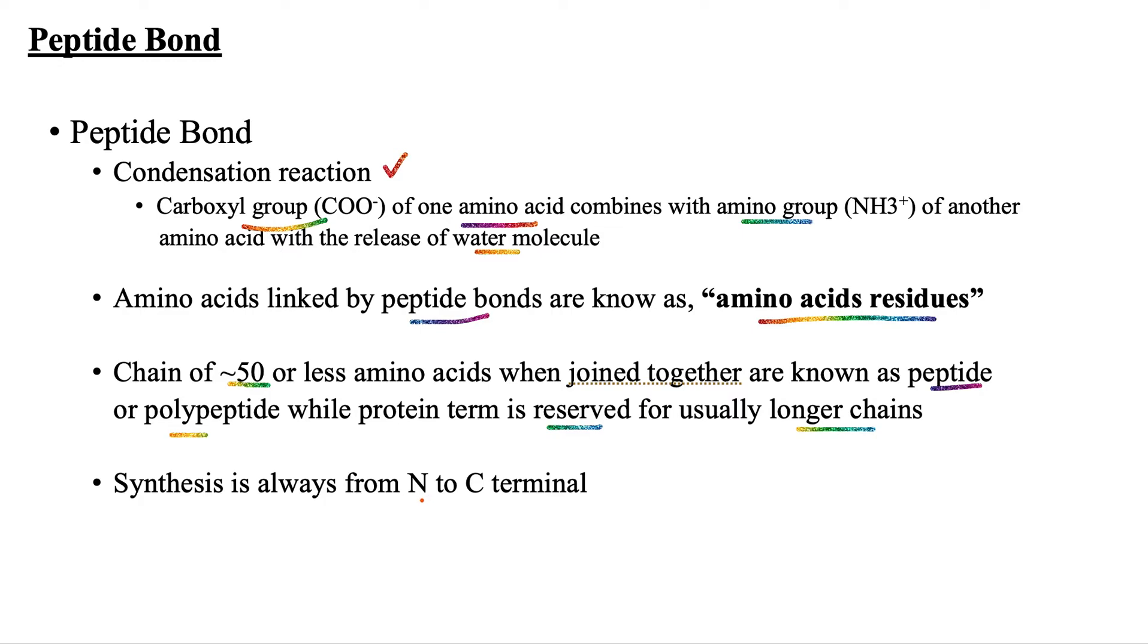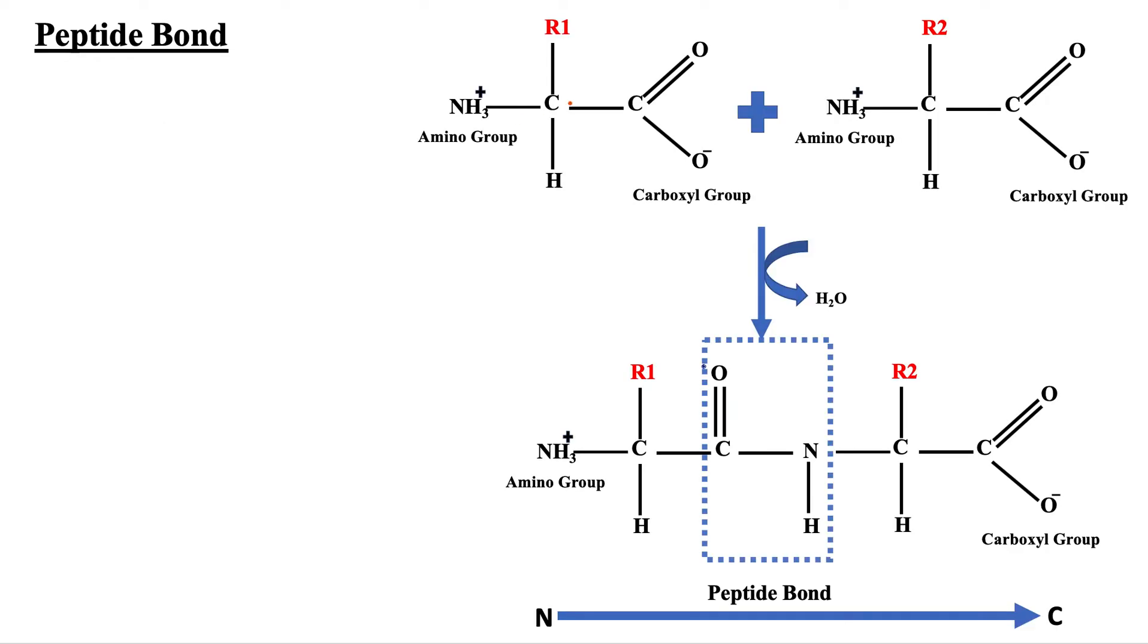The synthesis of this polypeptide chain is always from N to C terminus. Here I have shown the formation of a peptide bond between amino acid number one and amino acid number two. We can see the carboxylic group and amino group join together with the release of water, forming the peptide bond.